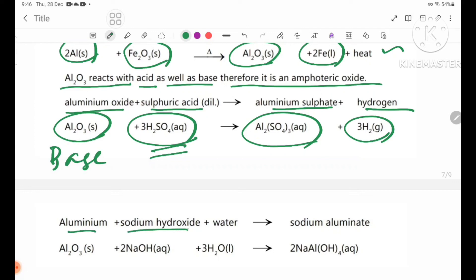Aluminum reacts with sodium hydroxide plus water to form sodium aluminate. Al2O3 solid plus NaOH aqueous plus H2O liquid forms NaAl(OH)4 aqueous.